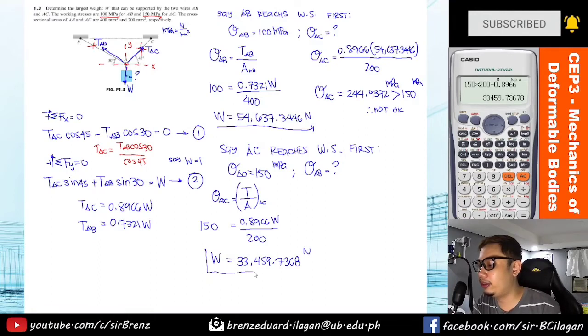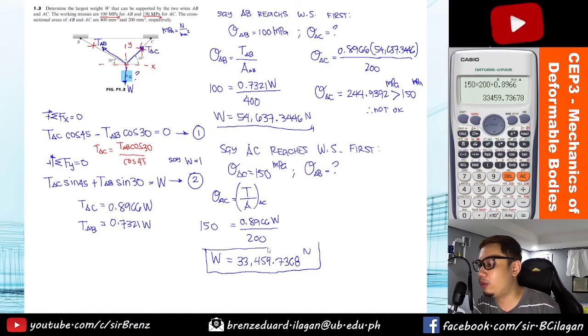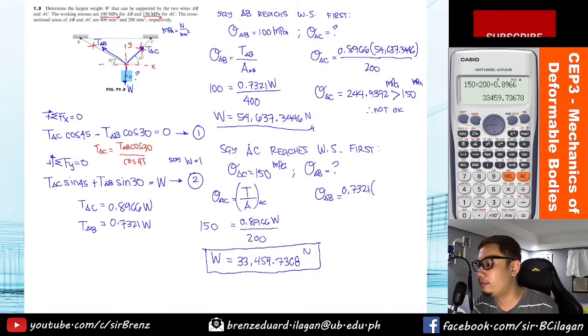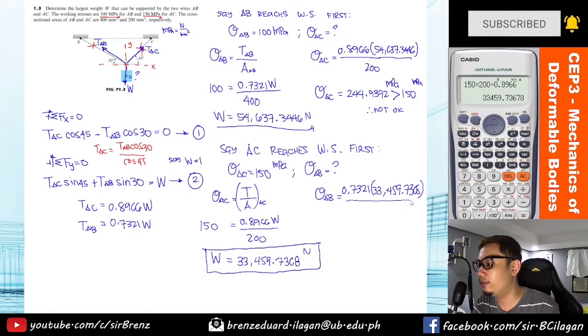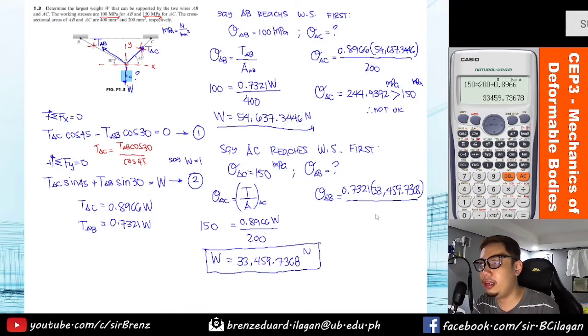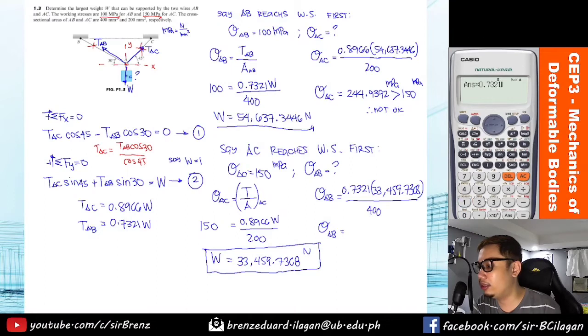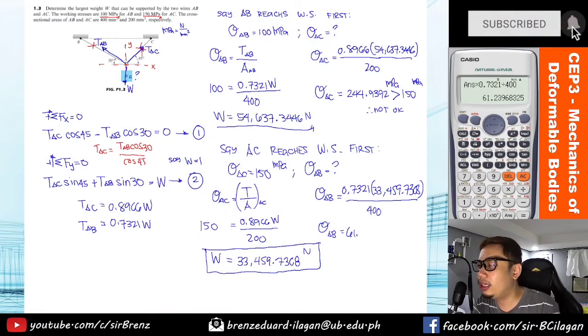But I'm sure this is the correct answer, but let's check what will be the actual stress experienced by AB if AC reaches 150 MPa. Stress in AB, same thing. Let's get this directly: 0.7321 times 33,459.7368 all over area AB, so over 400. This actual stress AB when AC reaches 150 MPa equals answer times 0.7321 divided by 400. So the answer for that is 61.2397 megapascals.